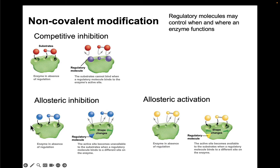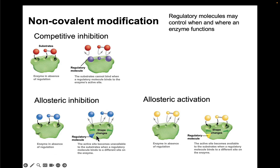Another type of inhibition is called allosteric inhibition. In this example, our reactants bind to the active site, but a regulatory molecule can come along and bind to the enzyme at a site different from the active site. This causes a shape change in the enzyme, which we refer to as a conformational change. Due to this shape change, the active site is no longer accessible to the reactants, so the enzyme is turned off. These are two types of inhibition: one where the regulatory molecule binds to the active site, and another where it binds elsewhere.